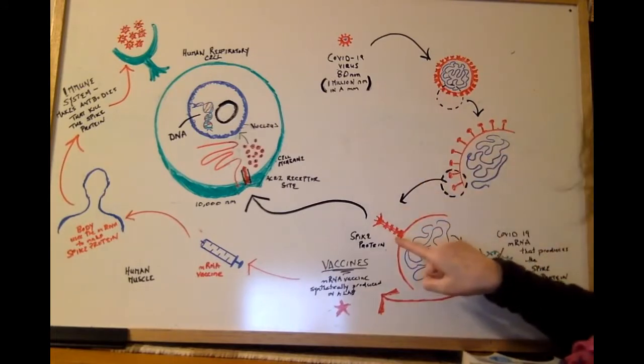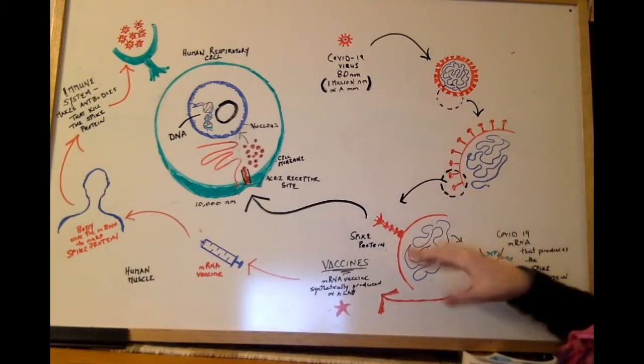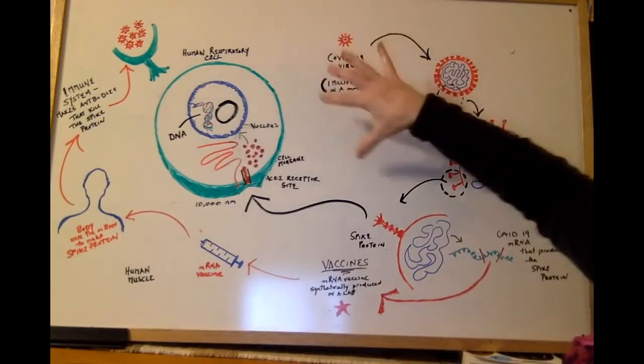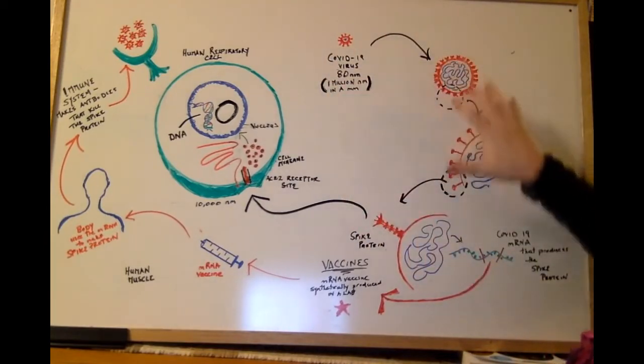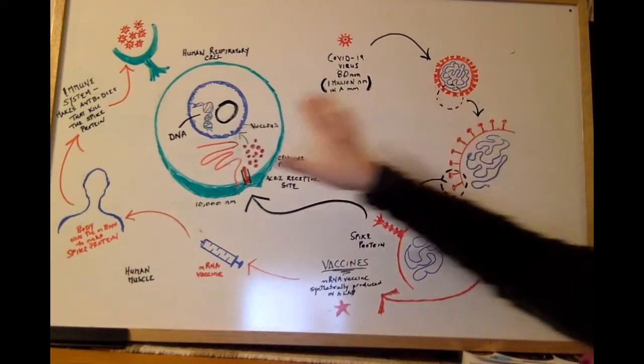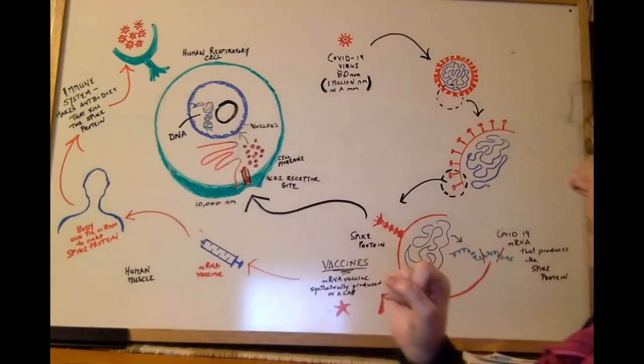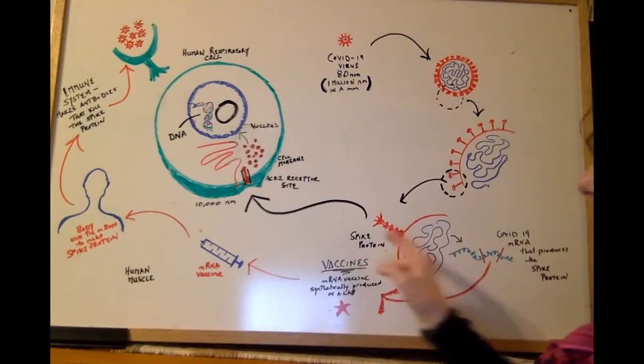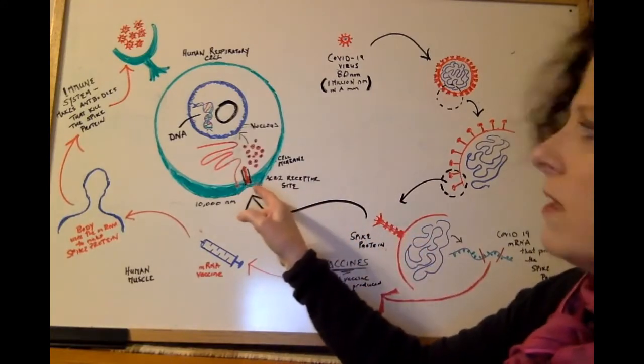This is what the spike protein looks like, illustrated. And it's the spike protein, when this virus enters into your bloodstream and is circulating around, it is searching for a way to enter into your body cells. And it uses the spike protein to get into the cells.